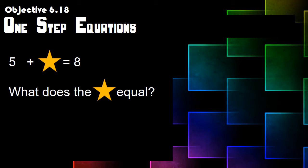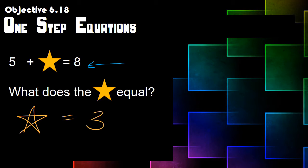You've been doing these one-step equations probably since first or second grade. You might have seen something like: five plus a star equals eight, and your first or second grade teacher said, 'What does the star equal?' In your head you went, 'Five plus what number equals eight?' So the star equals three, because you knew that five plus three equals eight.